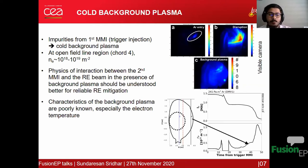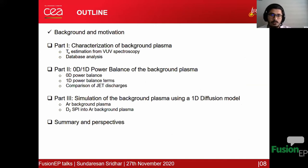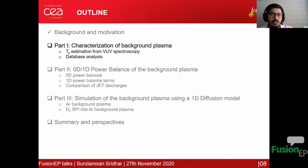It is very important to understand how the second massive material injection interacts with the runaway beam when a cold background plasma is present outside the electron beam. The problem is that in JET the background plasma characteristics are very poorly known, especially the electron temperature. This thesis is focused on understanding the physics of this interaction. My talk is divided into three parts: first, experimental characterization of the background plasma; second, an experiment-based zero-D or one-D power balance; and third, simulation using a 1D diffusion model.